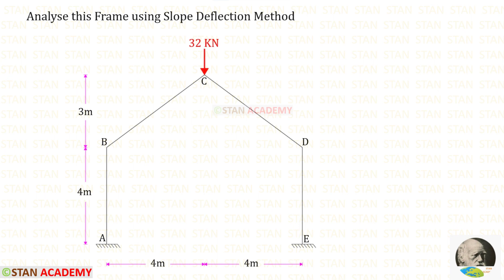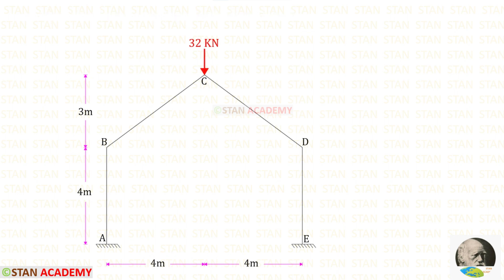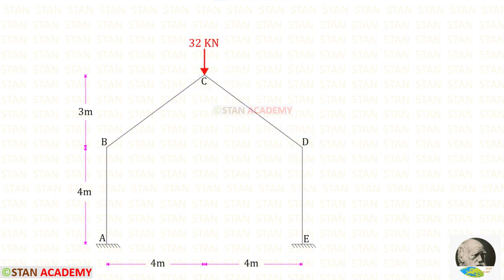Hello everyone. Today we are going to analyze this gable frame using the slope deflection method. This is a symmetrical frame. In the vertical members AB and DE, and in the inclined members BC and CD, there is no load. In joint C, we have a nodal point load of 32 kN.